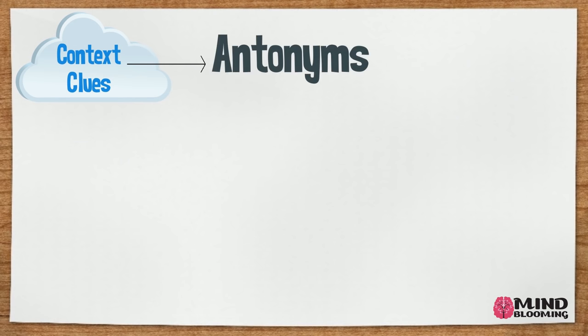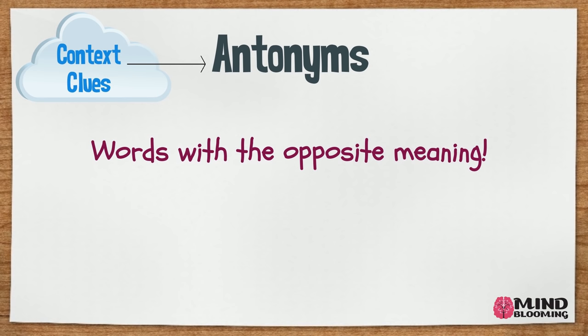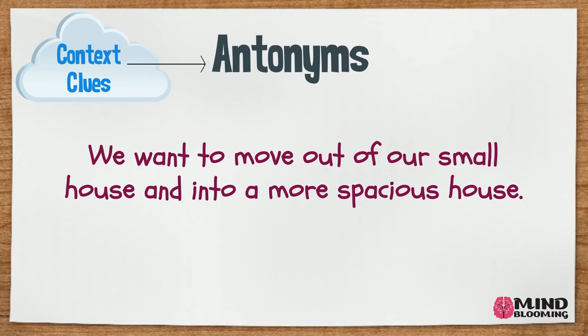Now let's see how finding an antonym in the sentence can be a clue to figuring out the meaning of a word. Remember that antonyms are words with opposite meaning. We want to move out of our small house and into a more spacious house. If you don't know what spacious means, you can probably guess from the sentence that they will move out from a small house to probably a bigger one. So the word spacious must mean big or large.